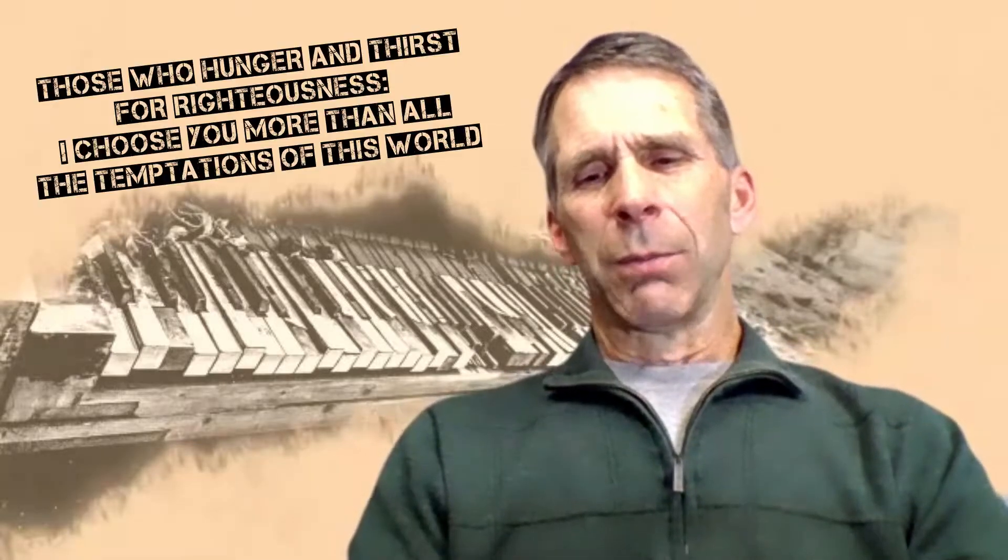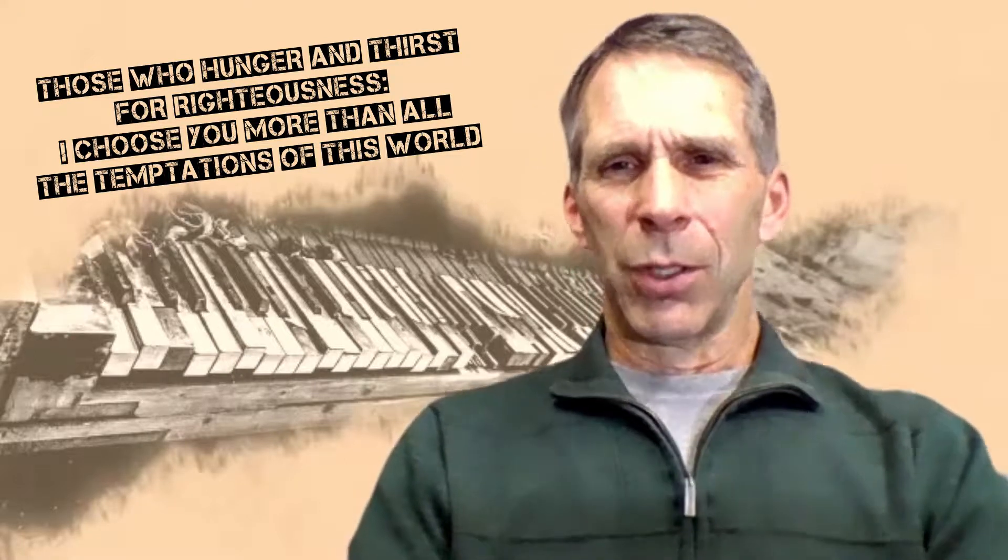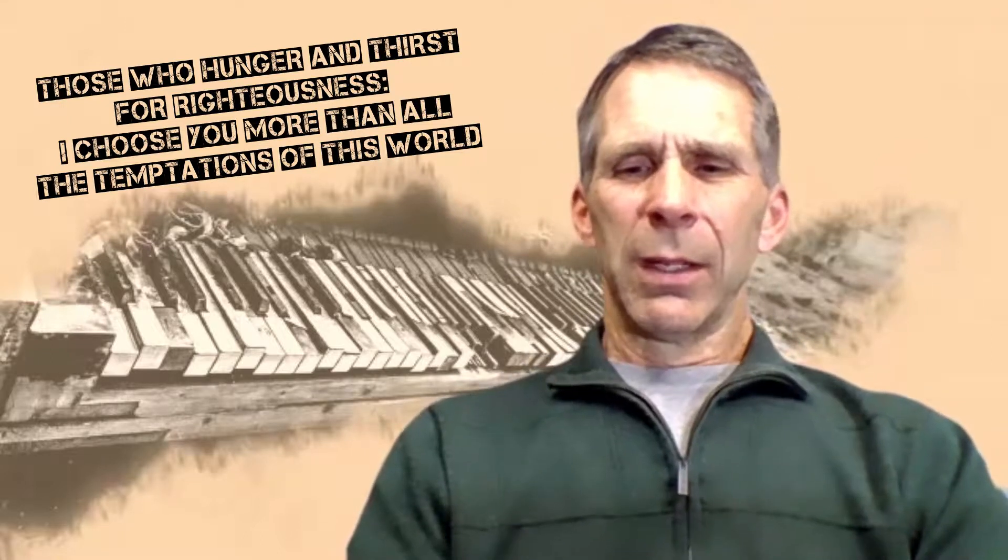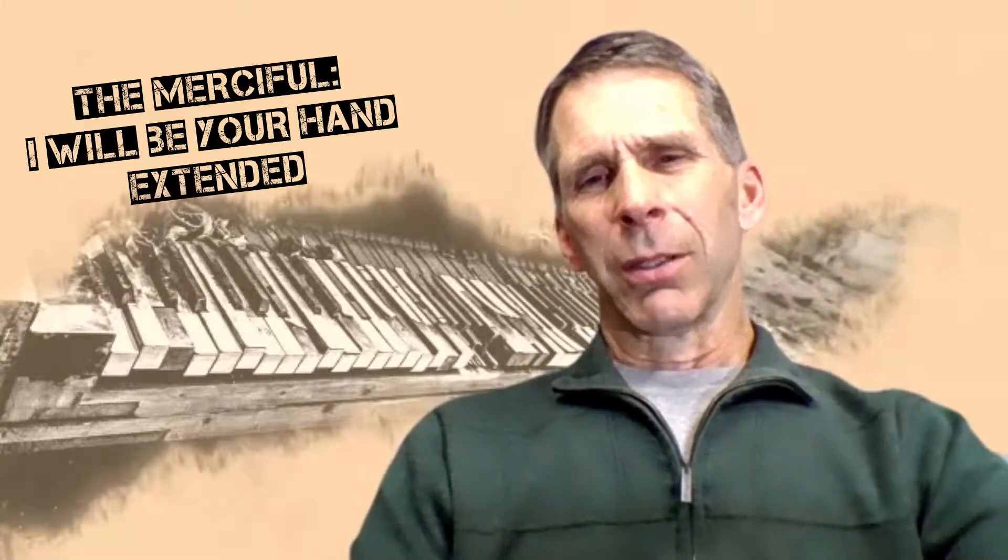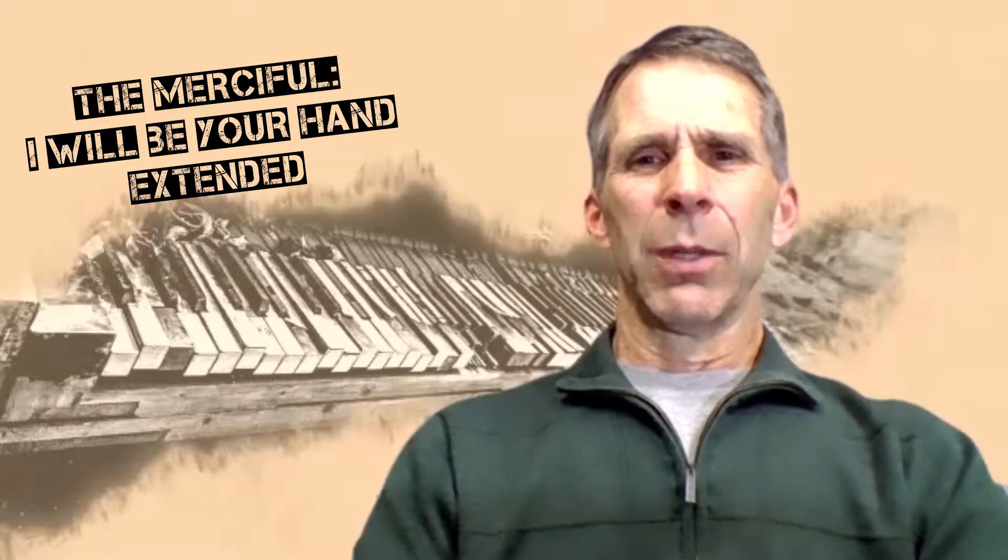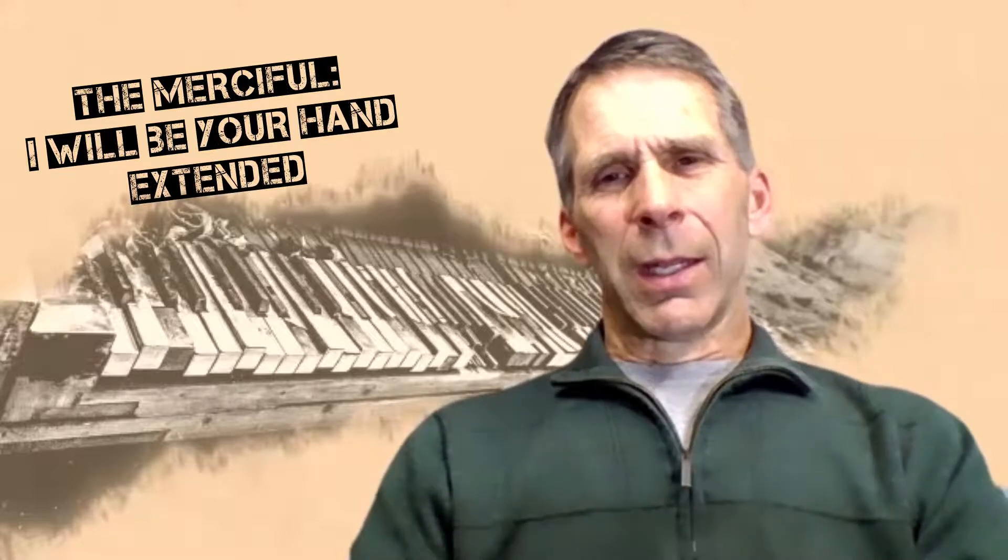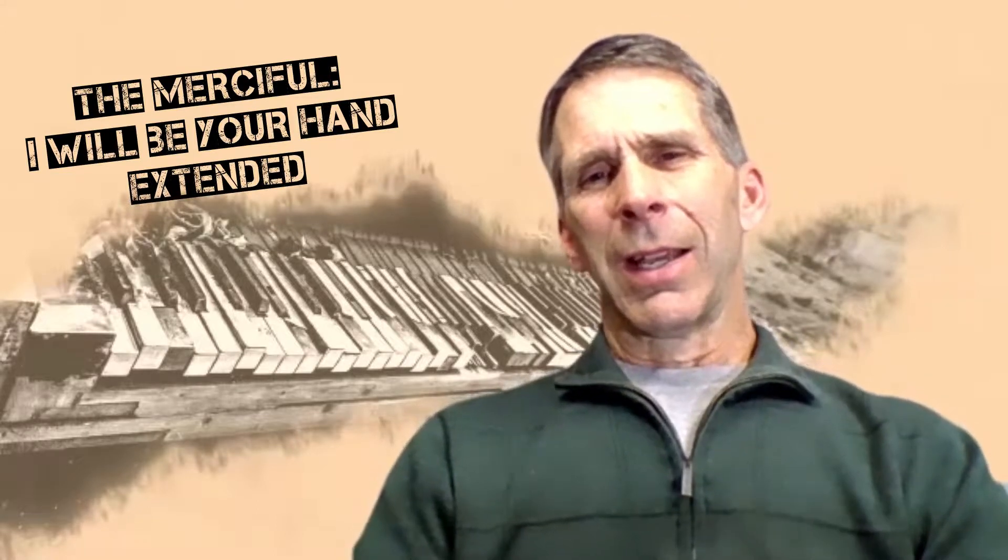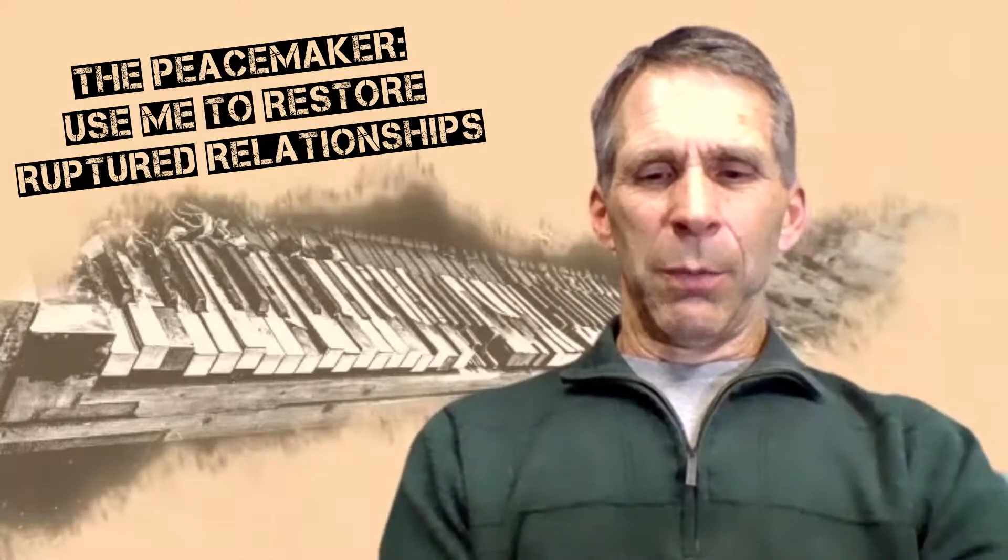The fourth key on the piano here, the beatitude that says, blessed are they that hunger and thirst after righteousness. Hungry, thirsty ones want more, more, more, more of Jesus. God, I choose you. More than all the temptations of this world. The next key there is blessed are the merciful. They'll obtain mercy. When God strikes that key, is he going to find a heart that says, yes. I'll do something about the need that I see before me, the spiritual need, the practical, physical needs. Mercy says, I care, and I want to help you. God, I'll be your hand extended.